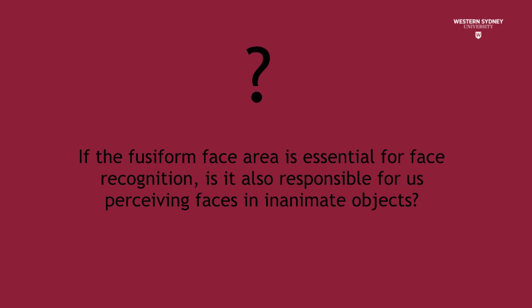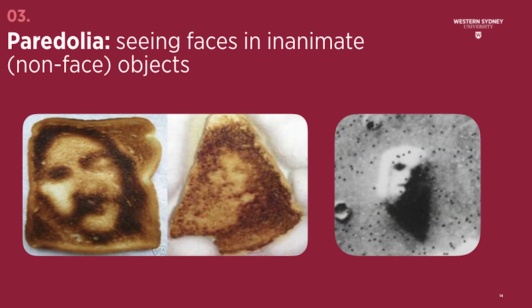Given that selective damage to the FFA causes selective impairments in face recognition — that is, prosopagnosia — this raises the following question: if the FFA is essential for face recognition, is it also responsible for us perceiving faces in inanimate objects? This is known as pareidolia. Three Australian researchers decided to test this hypothesis: Dr. Susan Wardle, Jessica Torbett, and Western Sydney University's own Dr. Kylie Seymour.